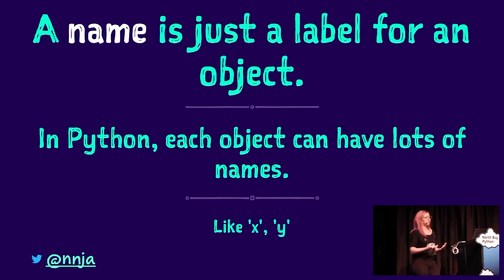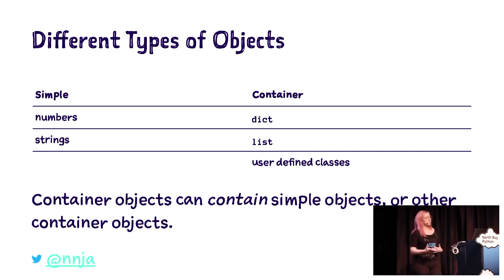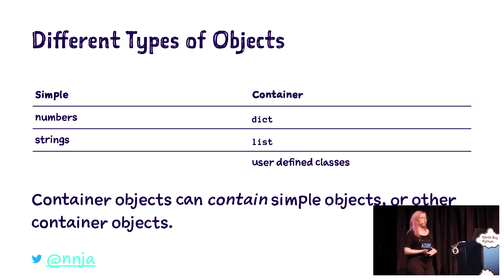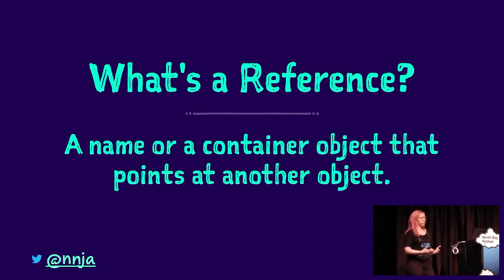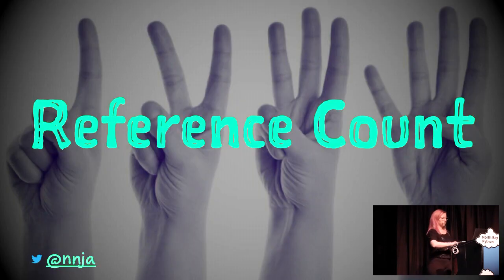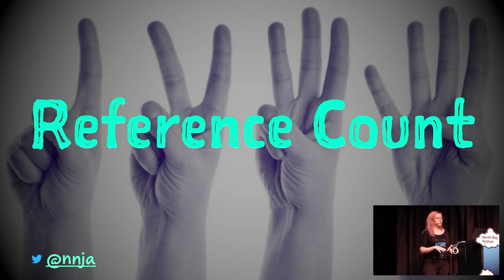How are Python objects stored in memory? With names, references, and objects. A name is just a label for an object. Each object can have lots of names, like A or B, X and Y — these names reference that object. Think about two categories of objects: simple objects like numbers and strings, which store their own value, and container objects like dictionaries, lists, and user-defined classes, which store references to other objects. A reference is a name or container object that points to another object, and we track the number of references to a particular object — that's called the reference count.